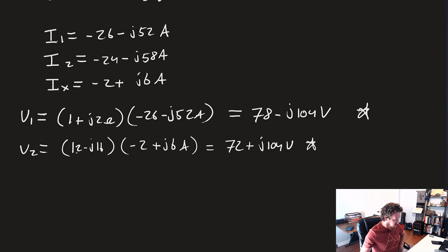And then last but not least, V3 was equal to 1 plus j3, that other impedance, that last impedance, times I2, which is minus 24 minus j58. And that's going to give us a final answer here of 150 minus j130 volts.